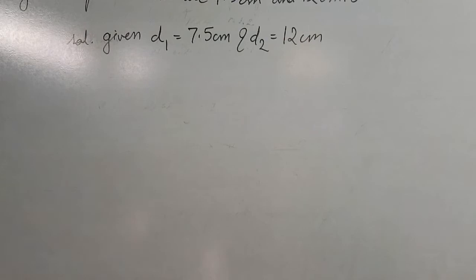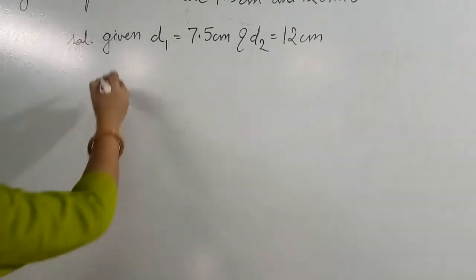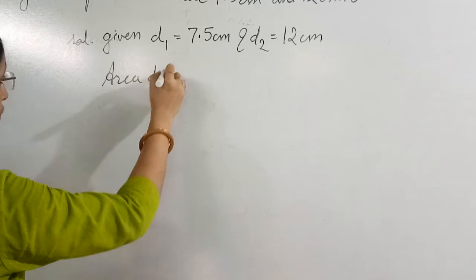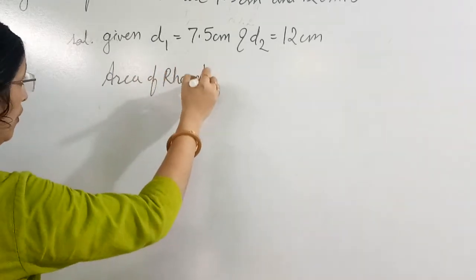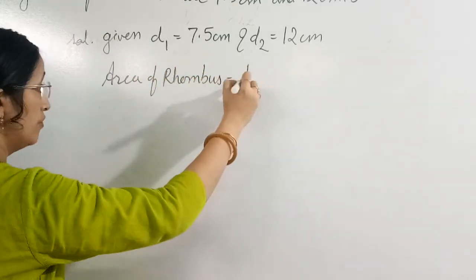They have given us the diagonals of rhombus as D1 7.5 cm and D2 12 cm. Now we will write directly area of rhombus. What is the area of rhombus?